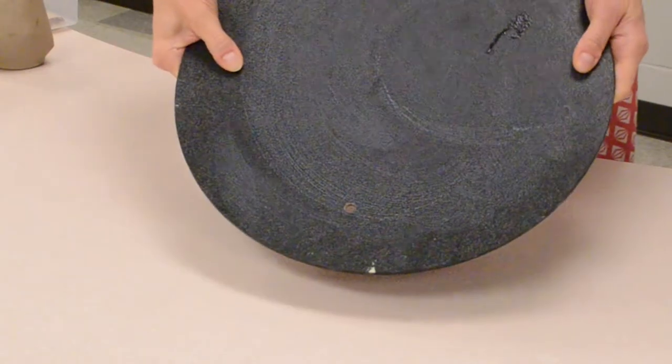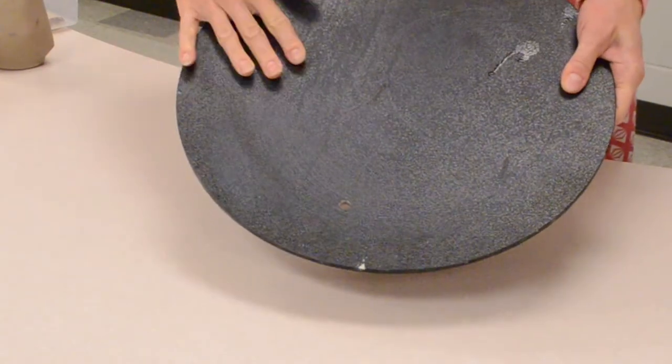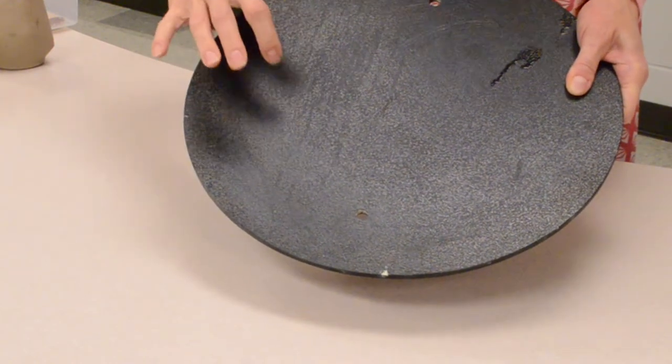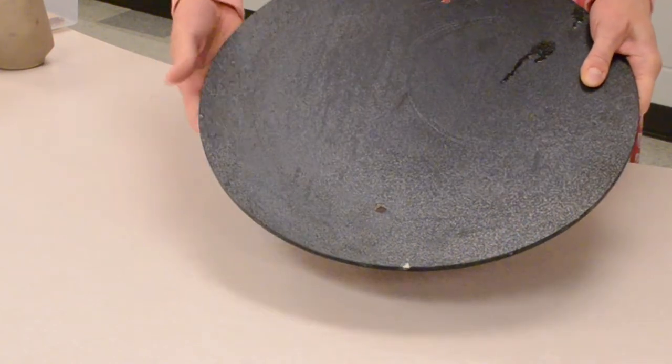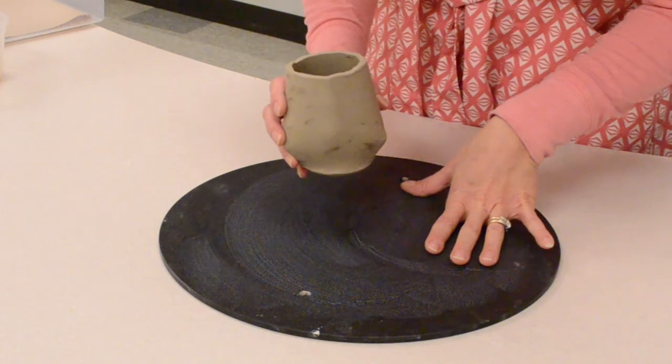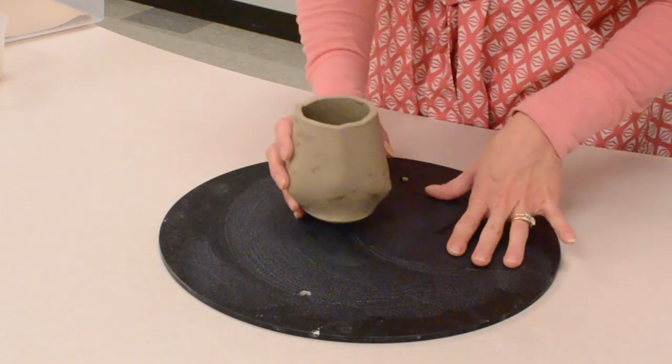Another option is to store your work on bats. These are used for throwing. There are different types of bats. Some are plastic and some are plaster or wood. This is a plastic bat. Since this is a plastic bat, it is more non-porous. You shouldn't have problems with things sticking.